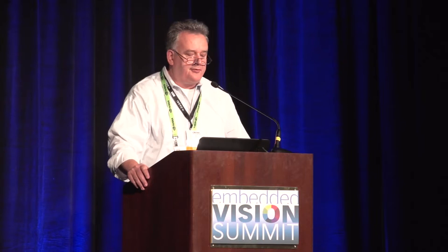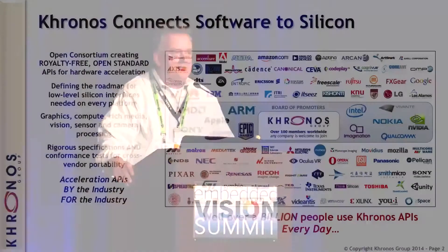As Jeff said, OpenVX is a Khronos API. The two-minute introduction to Khronos, in case you haven't come across us before: we're an open standards organization, open to any company that wants to participate and join. We have about 120 companies right now, everyone from Google and Apple all the way down through the silicon vendors, middleware vendors, application vendors, and a good quorum of the silicon community building processors for vision processing.